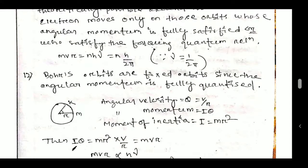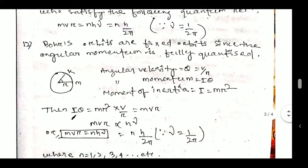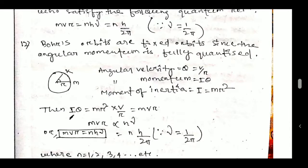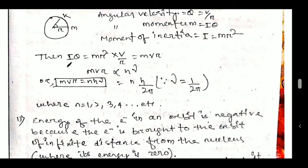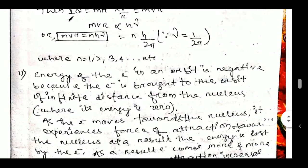Bohr's orbits are fixed orbits because the angular momentum is fully quantized. The angular velocity θ = v/r, and the angular momentum is Iθ, where the moment of inertia I = mr². Therefore, Iθ = mr² × (v/r) = mvr. Since mvr is directly proportional to hν, we write mvr = nhν, where n is a proportionality constant equal to 1, 2, 3, 4, etc.